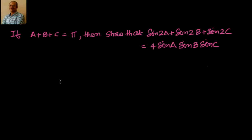In this problem, the condition we have been given is a plus b plus c equal to pi — that means a, b, c are angles of a triangle. We have to show that sin 2a plus sin 2b plus sin 2c equals 4 into sin a into sin b into sin c.